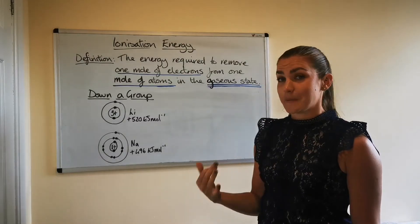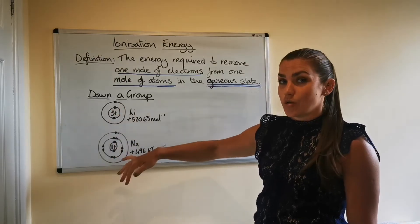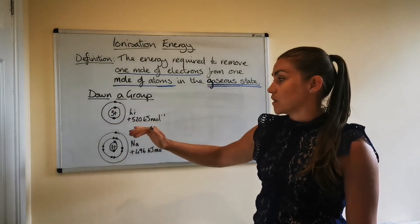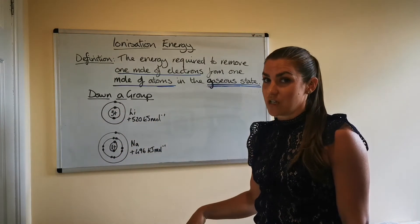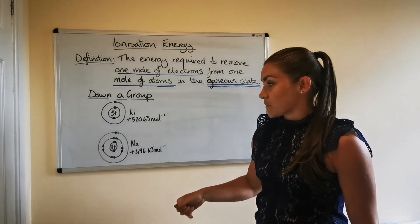Now, to explain that, so here, because we're going down a group, we're getting increasing numbers of occupied energy levels. So how does that then affect the amount of energy you need to remove one mole of electrons?